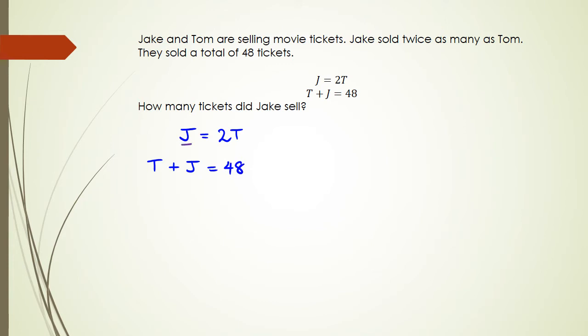But because j equals 2t we can actually replace that j with a 2t. So we're going to get t plus 2t equals 48. So simplifying this we're going to get 3t equals 48 and then t equals 48 divided by 3 which is equal to 16.